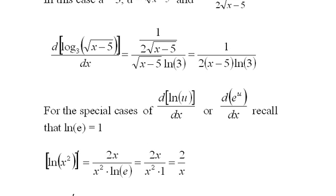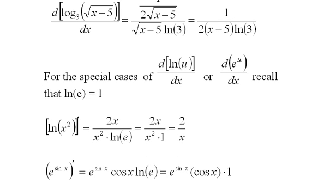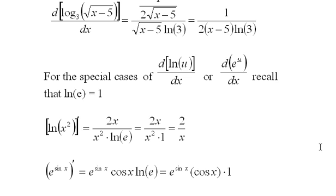Another example: the derivative of e to the sine x. Taking the derivative gives e to the sine x times cosine x. Since ln(e) is just one, it becomes e to the sine x times cosine x — you can leave the ln(a) term off entirely when the base is e.